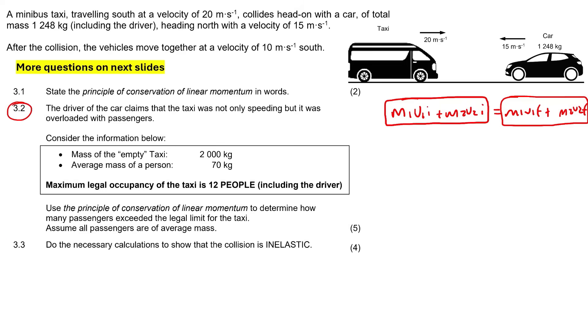The main thing I want you to know is that when there is a collision that takes place, the total momentum of the whole system before is going to be equal to the total momentum of the whole system after the crash. Now moving on to this question. It says the driver of the car claims that the taxi was not only speeding, but it was overloaded with passengers. Consider the information below. The mass of an empty taxi is supposed to be 2,000 kilograms, and the average mass of a person is 70 kilograms. The maximum occupancy is 12 people, including the driver. This is a cool question. We're going to have to do an investigation to see and predict where there may be more than 12 people in this taxi.